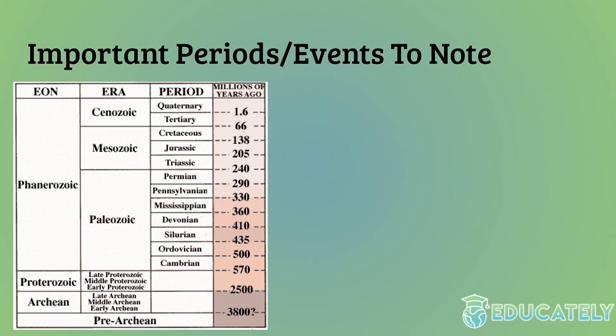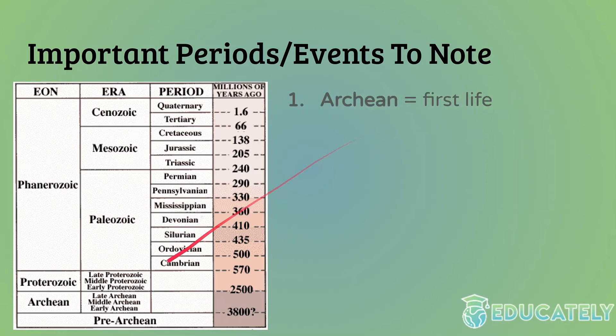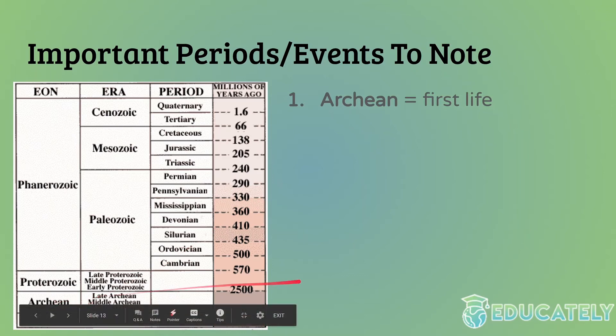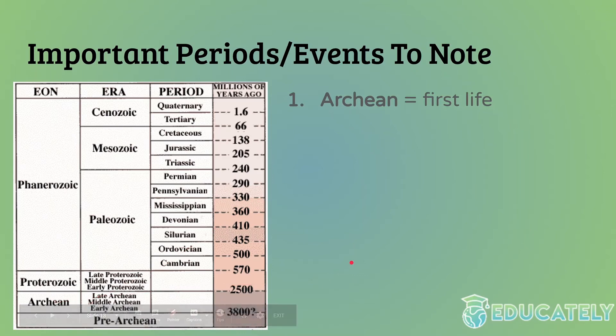Important periods and events to note along the scale: the Archean period is really when the first life appeared. Pre-Archean means there was no life — that's when there was no life around. Once you get to the Proterozoic era, it goes from unicellular, completely unorganized organisms to organisms getting a little more complex. They become non-microscopic around that time, and it's mostly algae and bacteria.